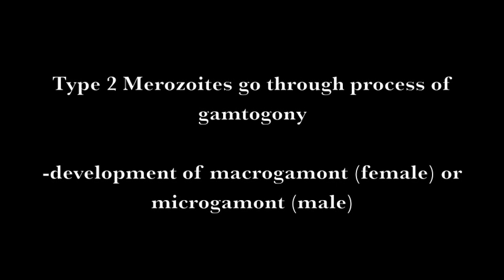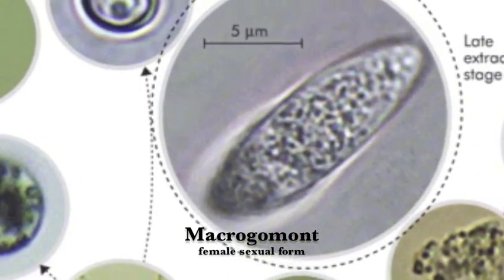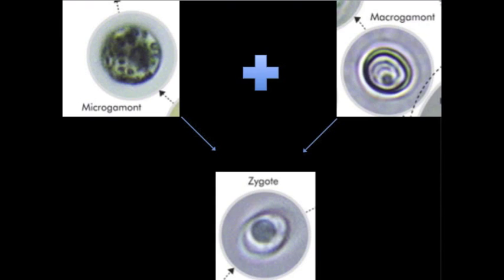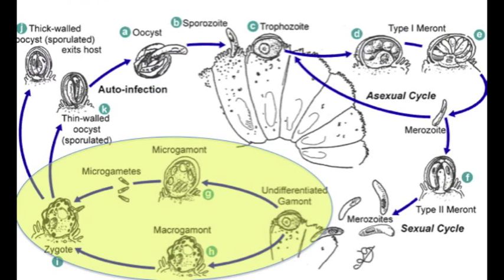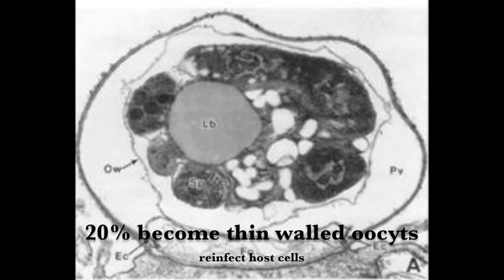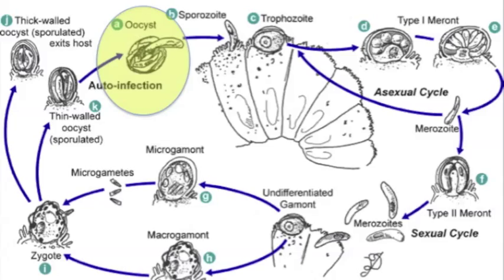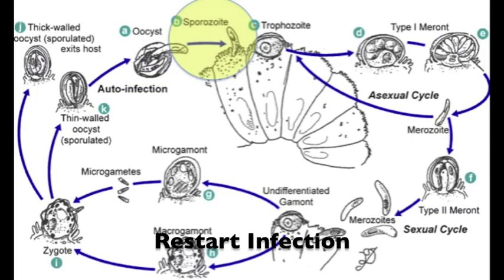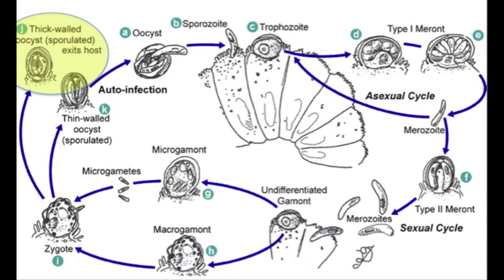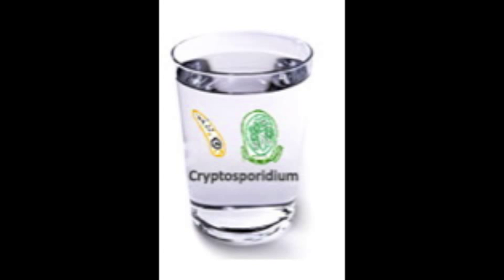At this point, type 2 merozoites go through a process called gametogony, which is the development of merozoites into either macrogametes, the female sexual form, or microgametes, the male sexual form. Microgametes fertilize macrogametes upon penetration to produce zygotes, which can develop into oocysts of two types. 20% of these oocysts become thin-walled sporulated oocysts, which reinfect the host by releasing sporozoites that restart the life cycle. 80% become thick-walled sporulated oocysts, which are mature and infective upon being secreted from the host and can survive in the environment without a host for months.